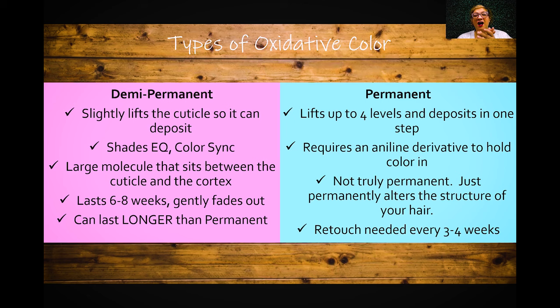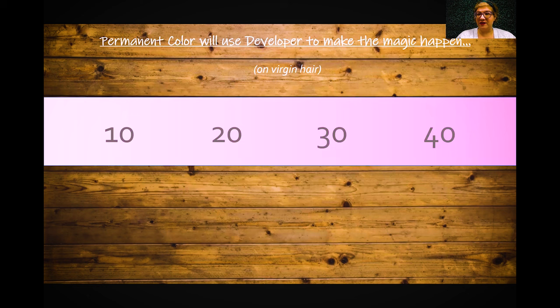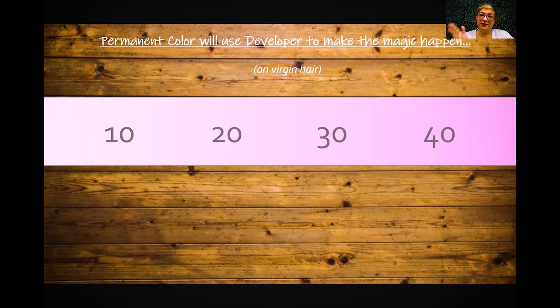You need to retouch every three to four weeks with permanent color. If you're refreshing the ends, I would almost always go back to demi-permanent because we've already done the lightening — why do we need to do more? Permanent color uses developer to make that magic happen — that's the catalyst for change. Developer comes in 10, 20, 30, or 40 volume. Demi-permanent also uses developer — about a 5 volume, or roughly 2% hydrogen peroxide.